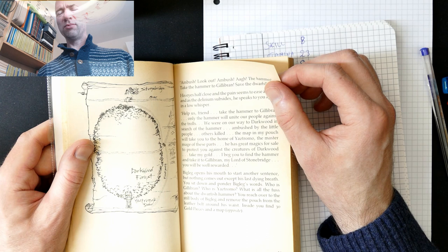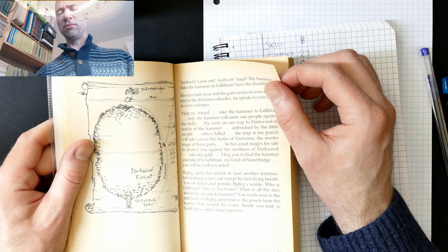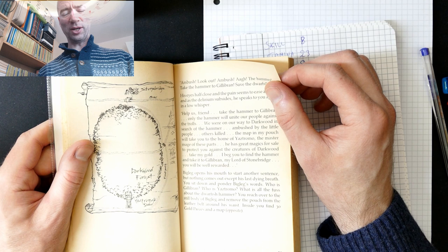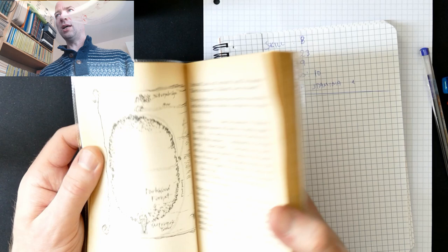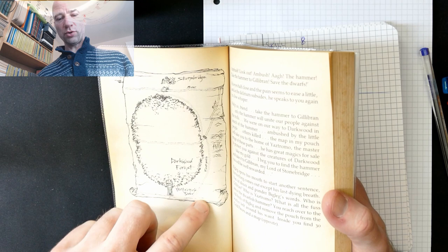Big Leg opens his mouth to start another sentence, but nothing comes out except his last dying breath. You sit down and ponder Big Leg's words. Who is Gillibrand? Who is Yaztromo? What is all the fuss about the dwarfish hammer? You reach over to the still body of Big Leg and remove the pouch from the leather belt around his waist. Inside you find 30 gold pieces and a map. And the map, as you can see, is extremely useful. Yaztromo's Tower, Stonebridge, River, Road, Darkwood Forest. Yeah, not very useful at all. Anyway.